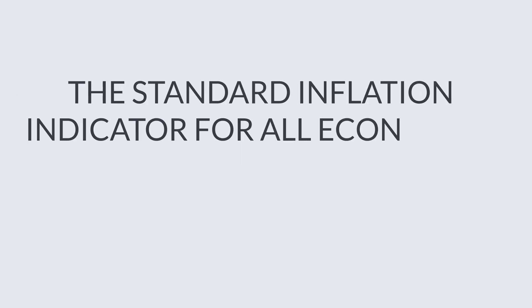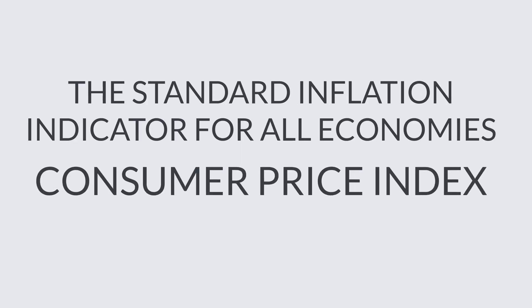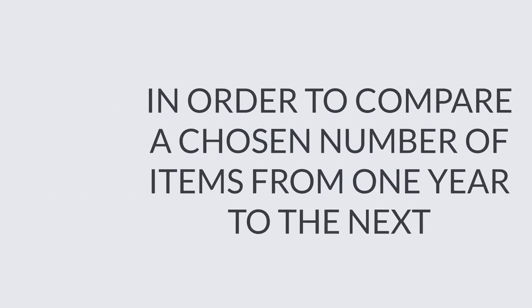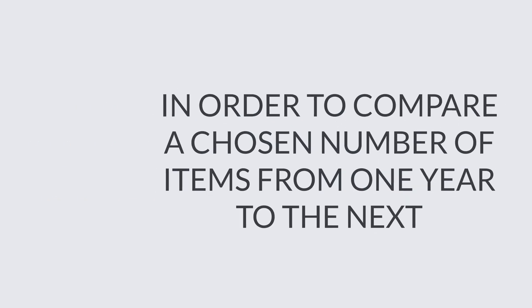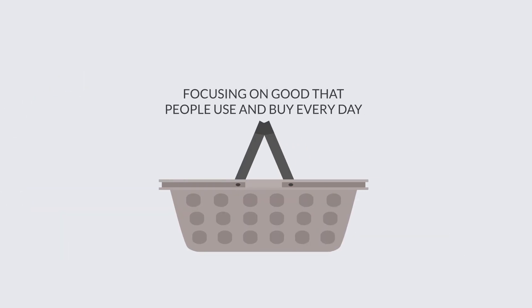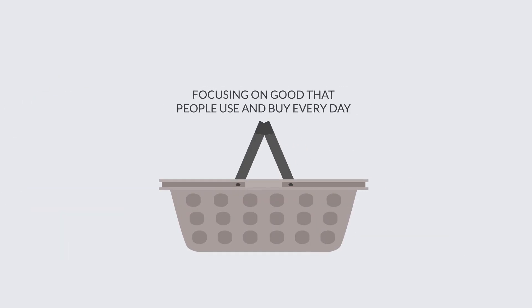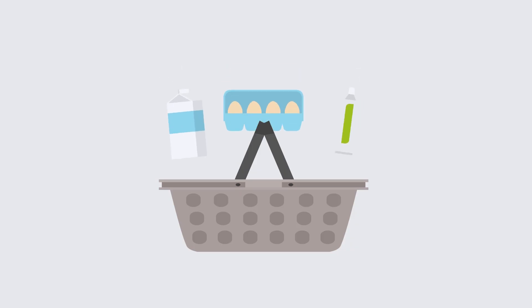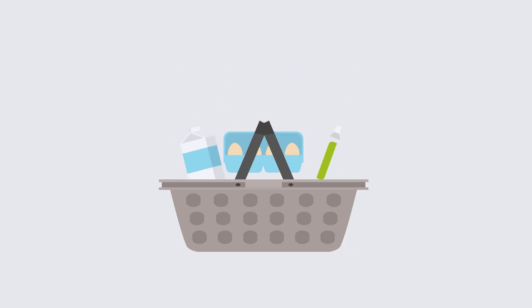The standard inflation indicator for all economies is the Consumer Price Index, or CPI. In order to compare a chosen number of items from one year to the next, it uses a basket of goods focusing on goods that people use and buy every day. Your milk, eggs, and toothpaste are some examples of items included in the CPI.